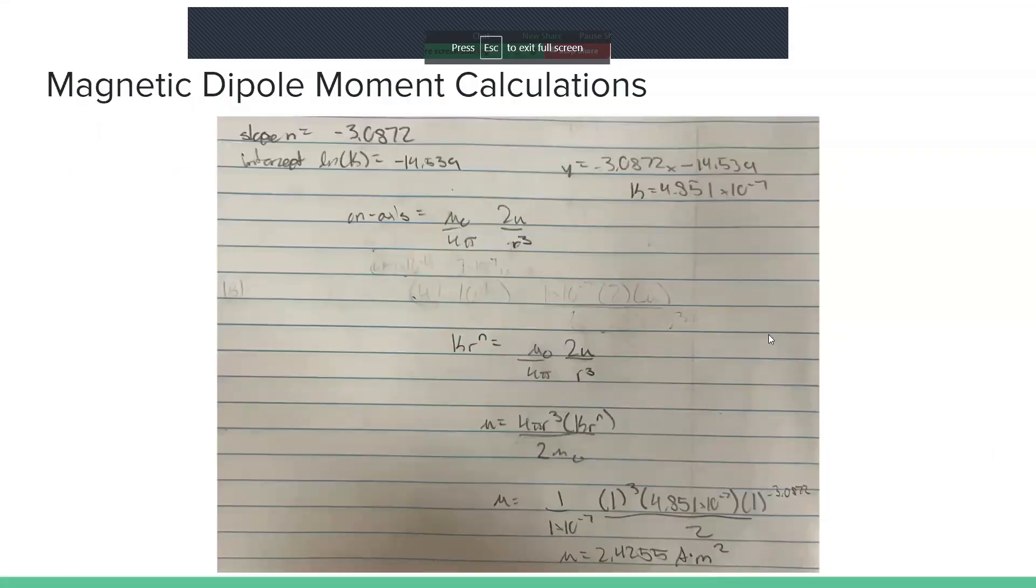Here is the math behind calculating the magnetic dipole moment. The Biot-Savart Law is set in equilibrium with the distance dependent formula, with the only unknown being the magnetic dipole moment. Note that we are given the value of natural log of k, but we need k itself to do the magnetic dipole calculations. Here you can see the magnetic dipole moment.